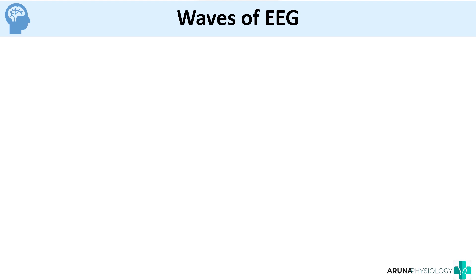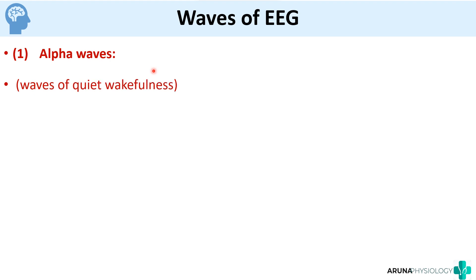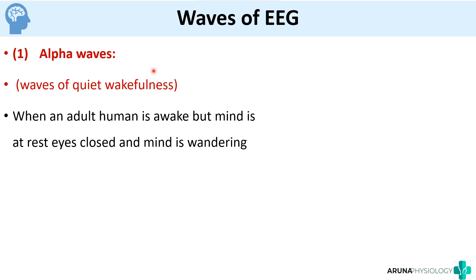Now we will see about the different waves of EEG. We have many different types of waves — we will see each one by one. The first one is called alpha waves, which are the waves produced in quiet wakefulness. What is meant by quiet wakefulness? When an adult human is awake but the mind is at rest, eyes closed and mind is wandering — you have closed your eyes but have not slept. At that time you have these alpha waves, and the frequency of these waves is around 8 to 12 hertz.